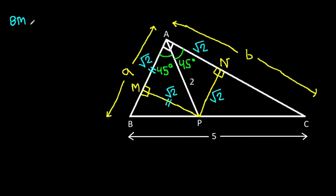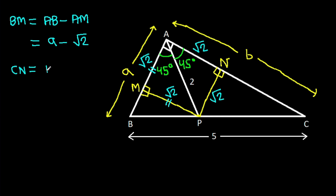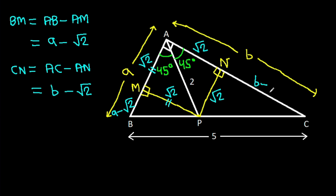So BM equals AB minus AM, which is A minus root 2. And CN equals AC minus AN, which is B minus root 2.